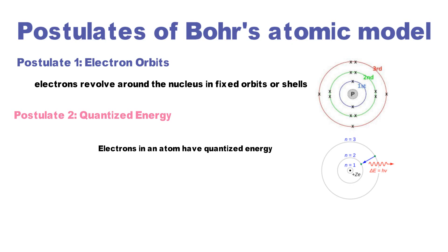The angular momentum of an electron in a stationary orbit is quantized. This means it's always an integral multiple of h divided by 2π, where h is Planck's constant. This quantization condition explains why only specific orbits are allowed.